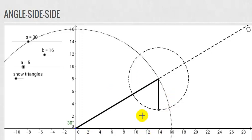So there is no possible triangle to form given this information of angle A is 30, b is 16, and little a is 5.